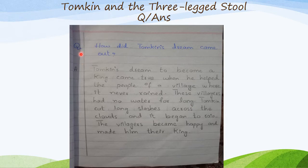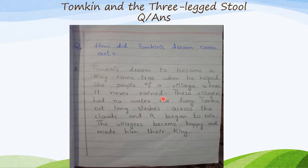Question number two: How did Tomkin's dream come true? Answer: Tomkin's dream to become a king came true when he helped the people of a village where it never rained. These villagers had no water for a long time. Tomkin cut long slashes across the clouds and it began to rain.